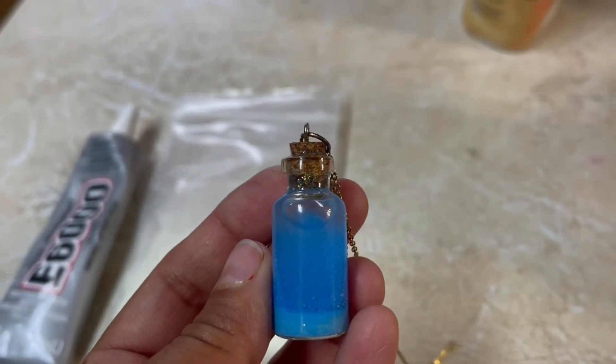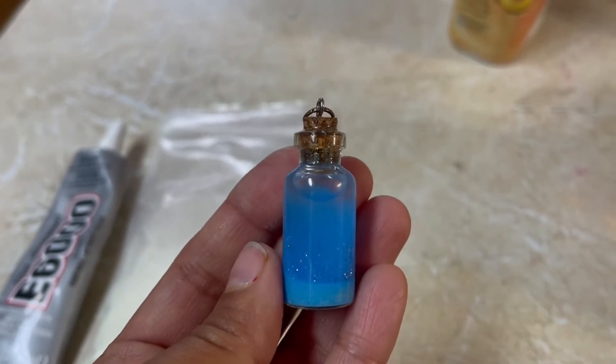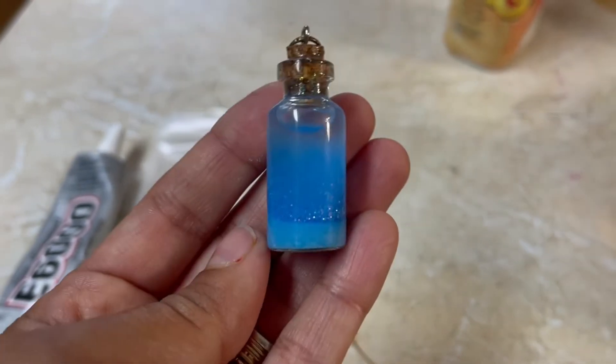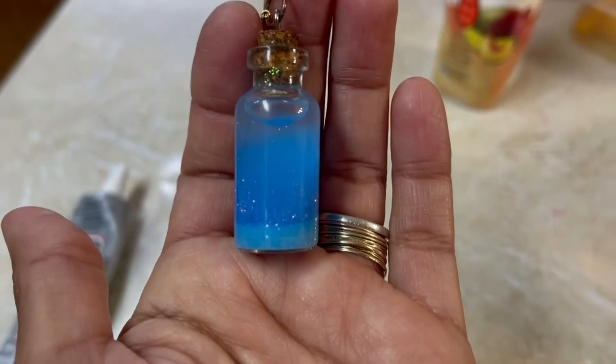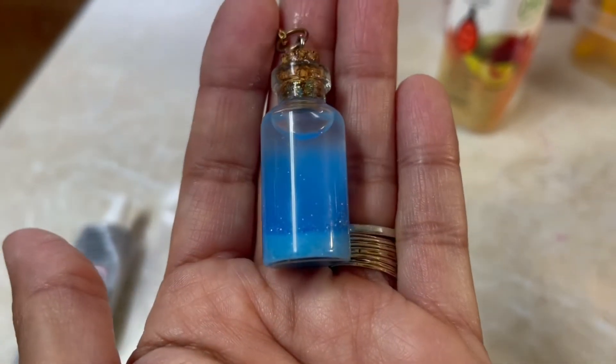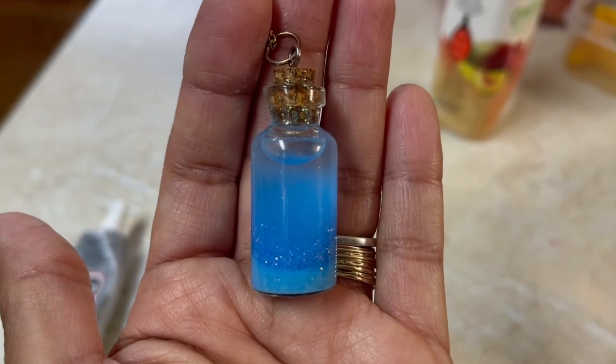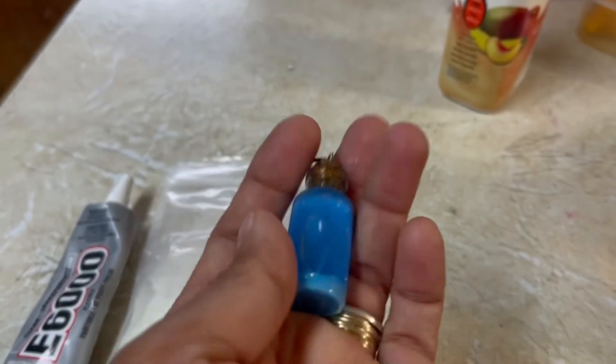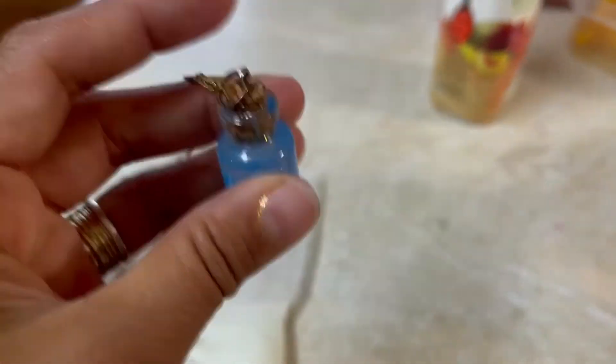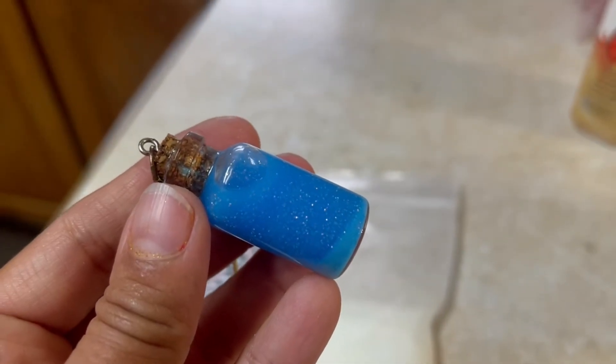Keep in mind that the glow powder and the glam powder are going to settle to the bottom of your vial if the bottle is not being shaken. But don't worry, all you have to do to bring its magic back is just to shake it a little and there you have it.